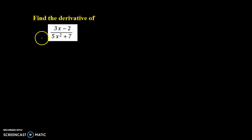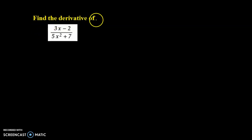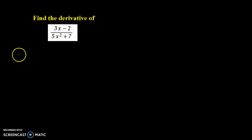Hello and welcome back. I have discussed the example from derivative. The question here is: find the derivative of (3x minus 2) upon (5x squared plus 7).